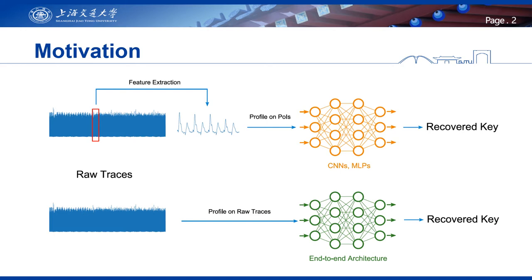Therefore, we argue that to fully utilize the potential of deep learning and get rid of any manual intervention, we need end-to-end profiling that directly maps raw traces to target intermediate values. In our paper, we propose an end-to-end architecture composed of encoders, attention mechanisms, and a classifier to conduct this end-to-end profiling.